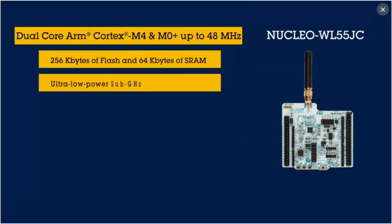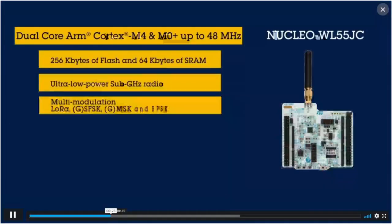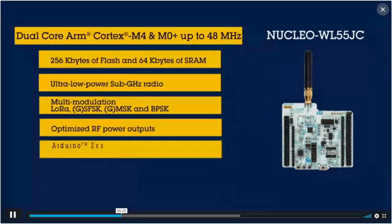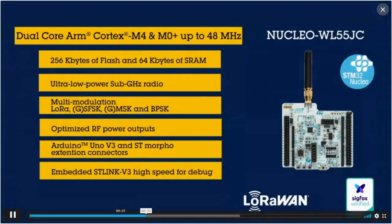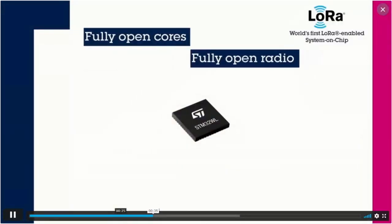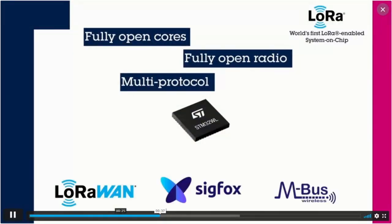The key points to keep in mind for the STM32 WL: first, it has multi-modulation capability with LoRa modulation but also GFSK, GMSK, and BPSK. This allows you to push whatever protocol you want onto the device, such as the LoRaWAN protocol, but also Sigfox, Wireless M-Bus, or the Zeta protocol.